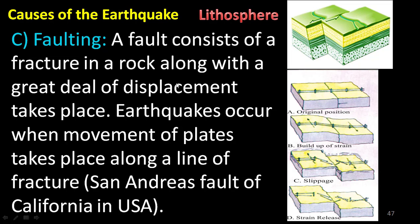The next cause is faulting. A fault consists of a fracture in a rock — just like fractures can happen to human bones, cracks and fractures happen in rocks along with a great deal of displacement. Earthquakes occur when movement of plates takes place along a line of fracture. The San Andreas Fault of California is an example of a rock fracture that is a cause of earthquakes.